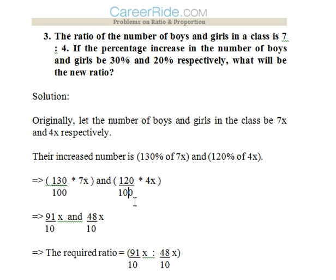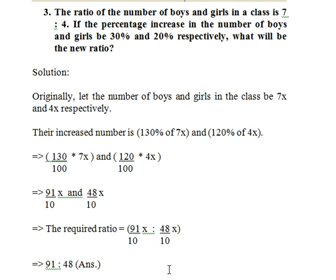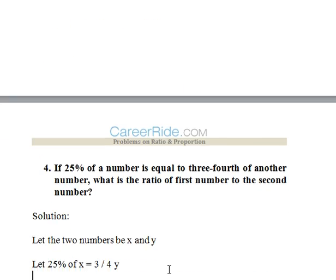So 130/100 into 7x and 120/100 into 4x, so that would be equal to 91/10 x and 48/10 x. So the required ratio would be 91x/10 is to 48x/10, that is 91 is to 48.